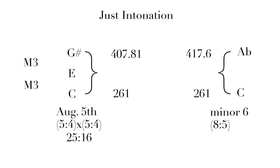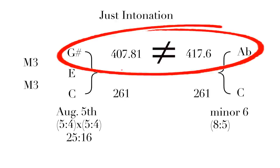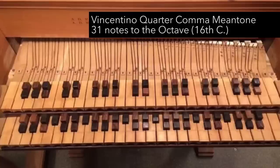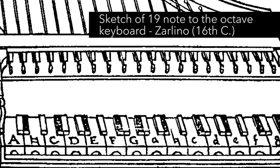However, 261 multiplied by 8 to 5 gives us an A flat whose frequency is 417.6, which in fact mathematically shows that G sharp and A flat are not the same note. And, in fact, some early pianos were specifically designed to deal with this problem.